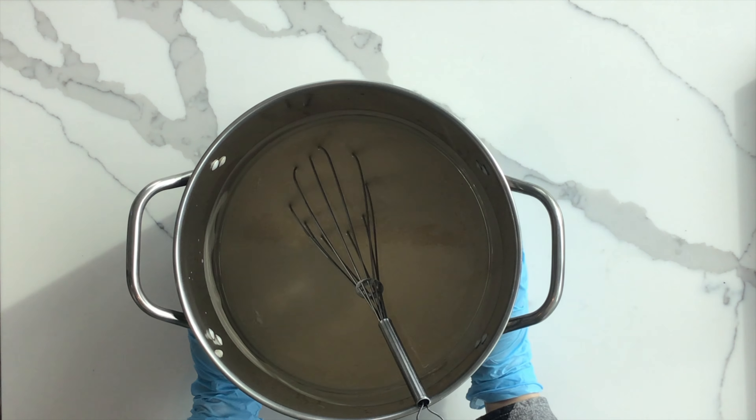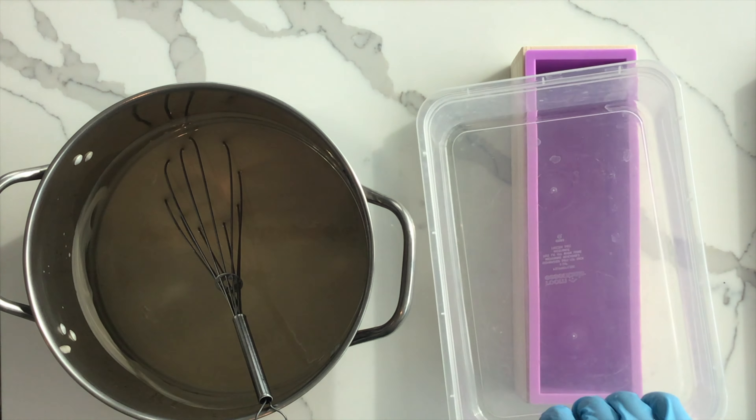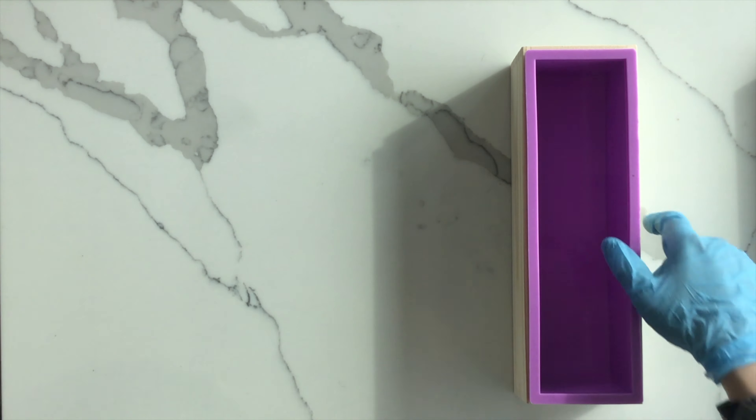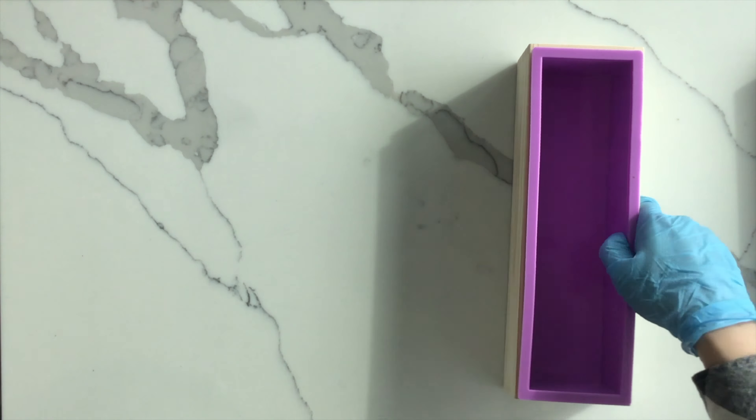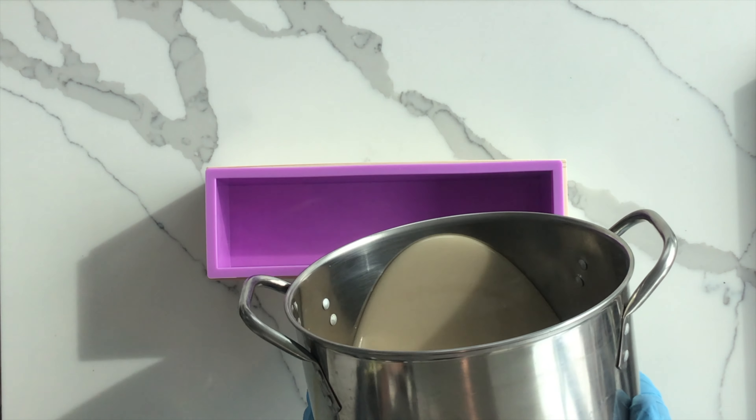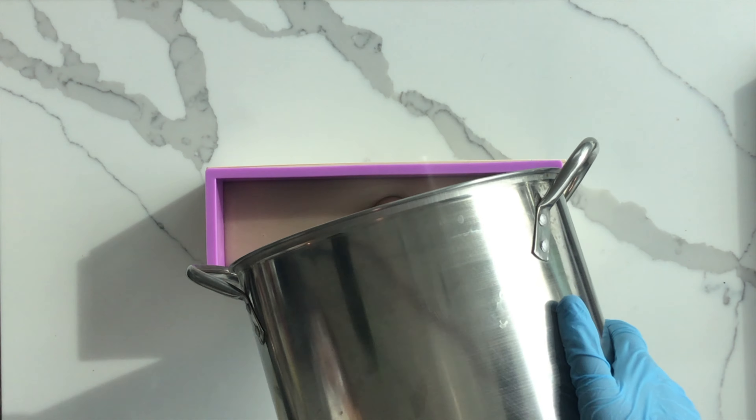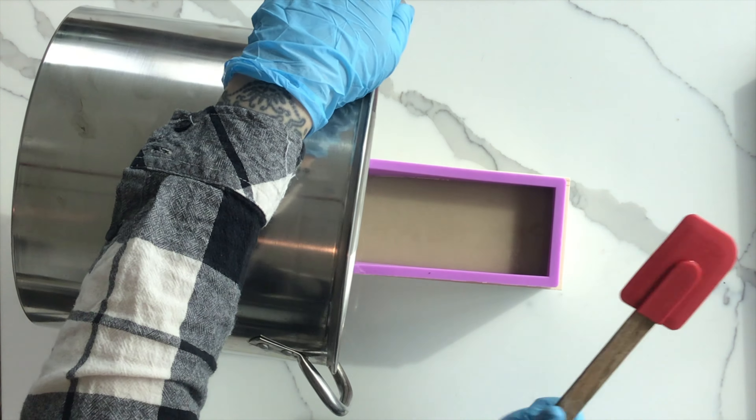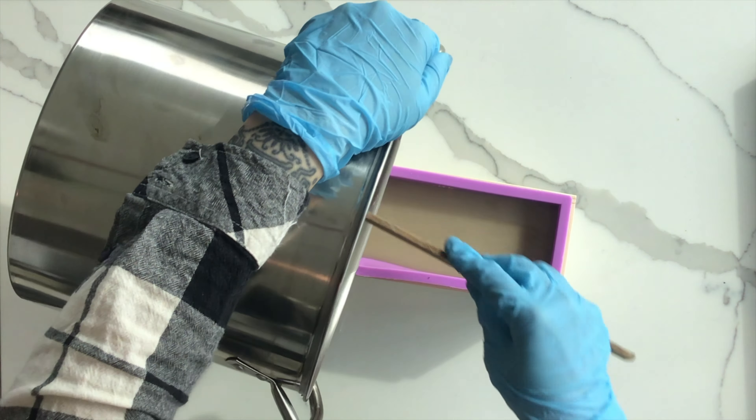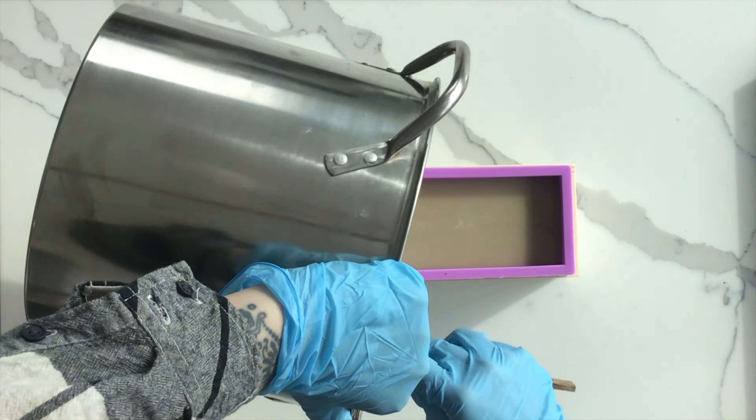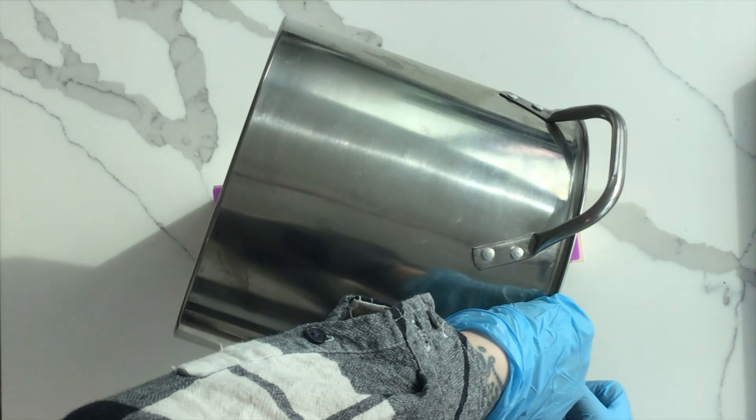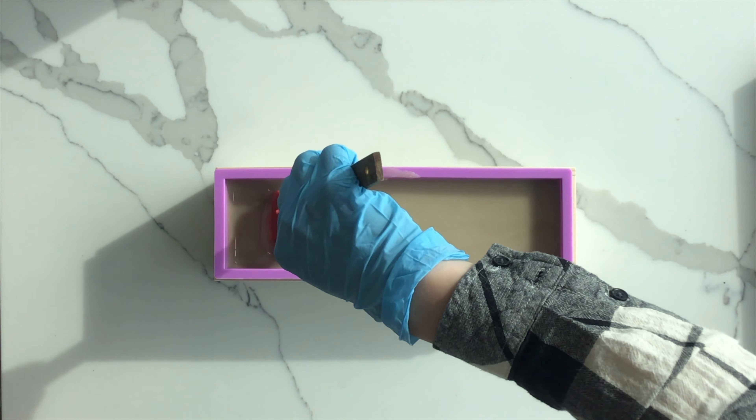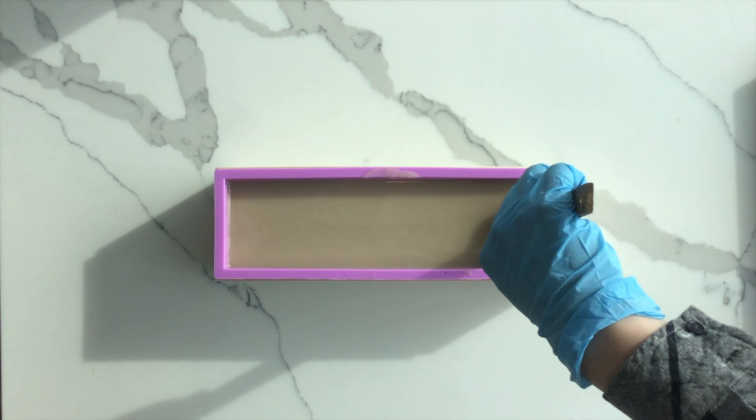Now it's ready to pour into the mold. Again, you can use an alternative mold if you don't have something like this. Use the rubber scraper to make sure all of the soap gets into the mold. This batch is pretty thin. If you stir longer, it'll be thicker and then you can sculpt the top of the soap with decorative patterns and peaks to add some aesthetic value.